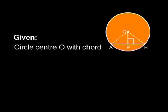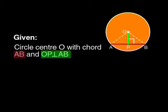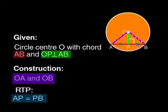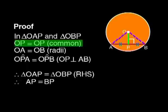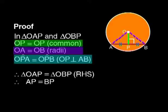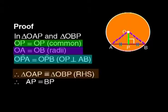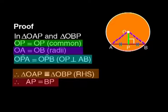Let's write this down as a formal proof. We are given a circle center O with chord AB and OP perpendicular to AB. We construct OA and OB, and we are required to prove that AP equals PB. In triangle OAP and triangle OBP: OP is common; OA equals OB, as they are both radii; and angle OPA equals angle OPB equals 90 degrees, because OP is perpendicular to AB. Therefore the triangles are congruent, and so AP equals BP.